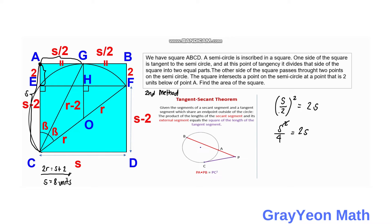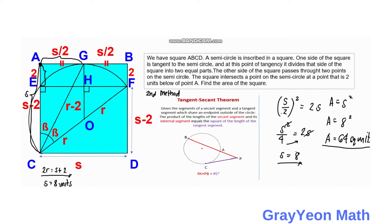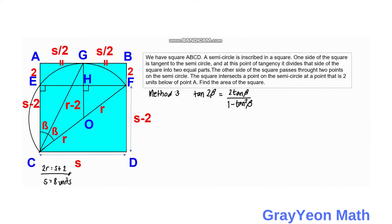Applying the theorem: (S over 2) squared equals 2 times S. Simplifying: S squared over 4 equals 2S. Canceling S and cross-multiplying gives S equals 8. The area is 8 squared, which equals 64 square units — the same answer as the first method.